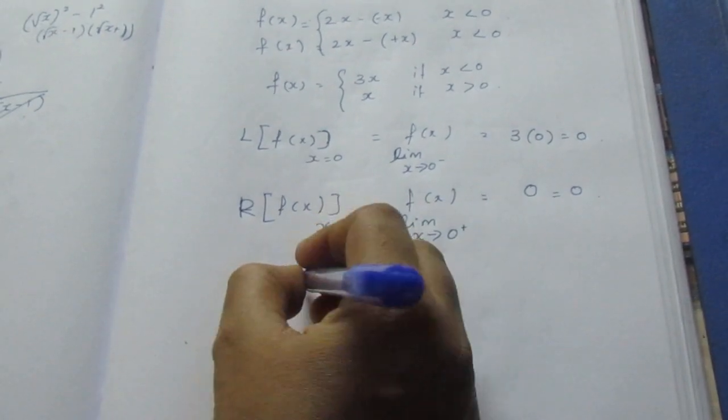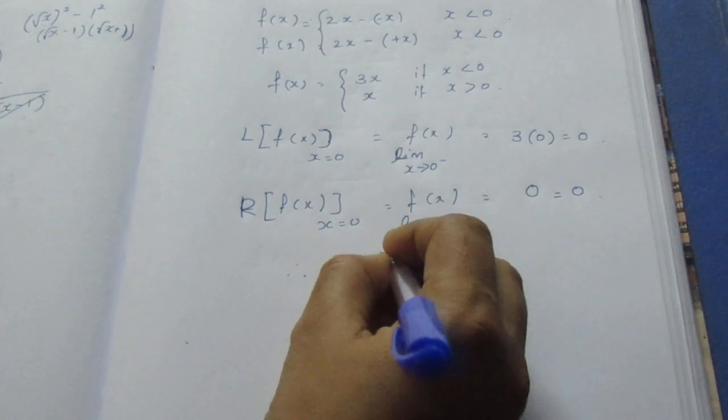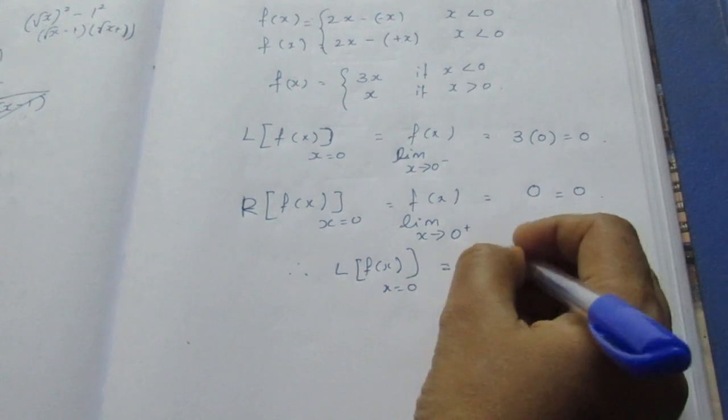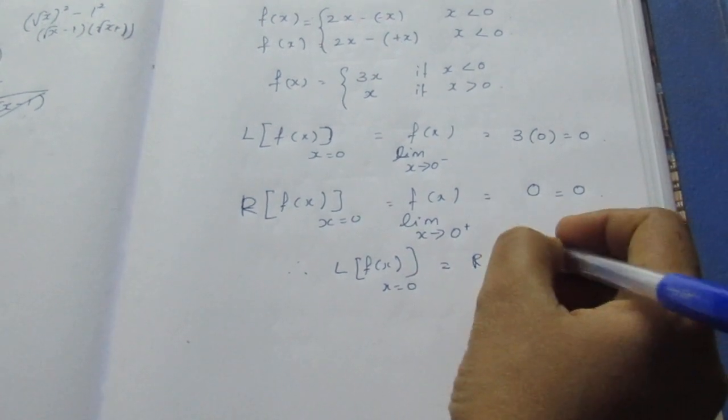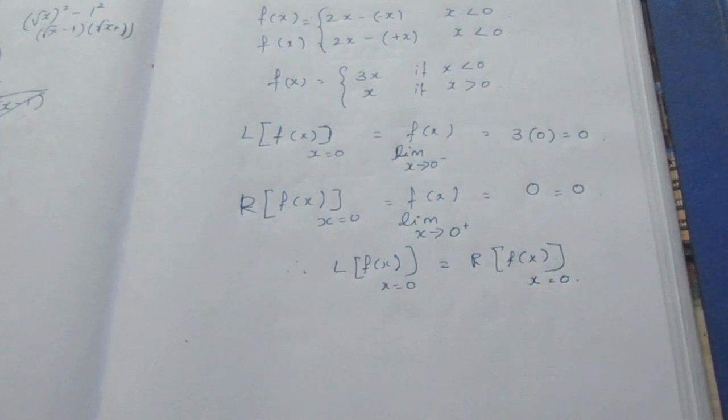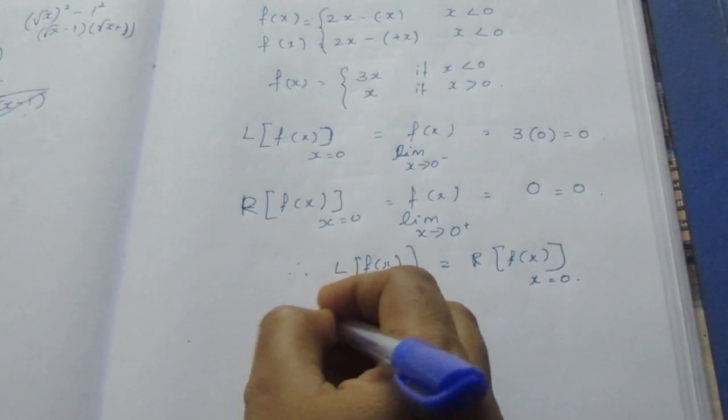Therefore, left limit of f(x) equals right limit of f(x) at x = 0, equal to 0. Therefore, f(x) is continuous.